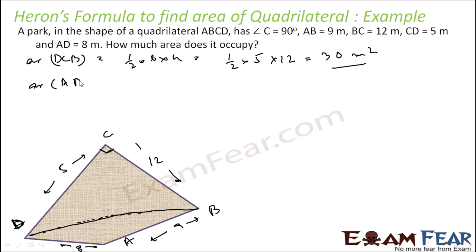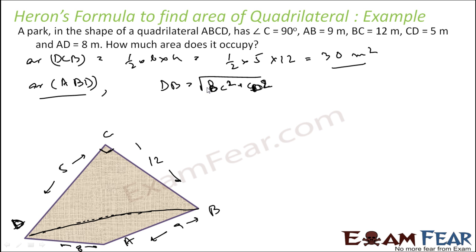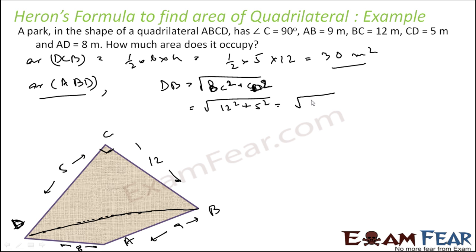Now we have to find the area of triangle ABD. For this, first we need to find DB using the Pythagorean theorem. DB equals root of BC squared plus CD squared. BC is 12 and CD is 5, so DB equals root of 144 plus 25, which is root of 169, that is 13 meters.